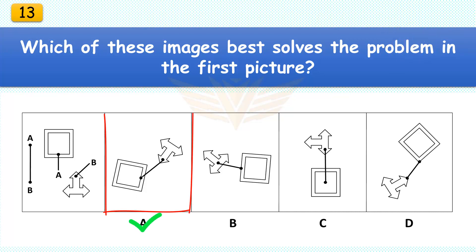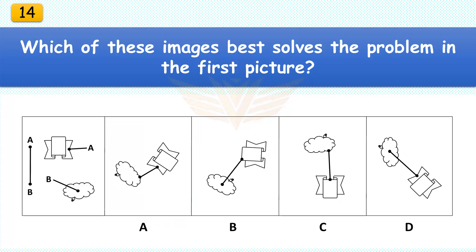Which of these images best solves the problem in the first picture? The correct answer is A. Rotate the square object almost 90 degrees and then rotate the arrow sign 135 degrees and move it up.